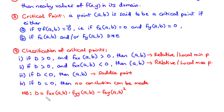To find D, the discriminant, it is given by the expression: D equals fxx of AB times fyy of AB minus the square of the mixed partial derivative fxy of AB. This gives us all the information we need to find the relative minimum and maximum of multivariable functions.